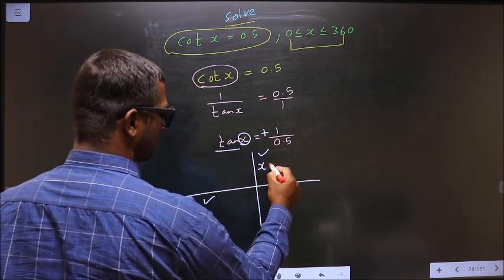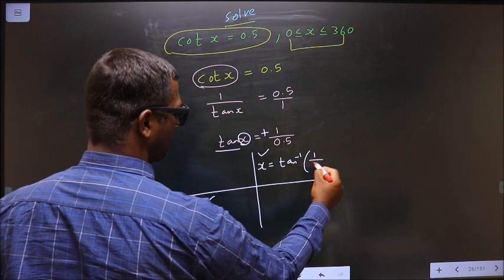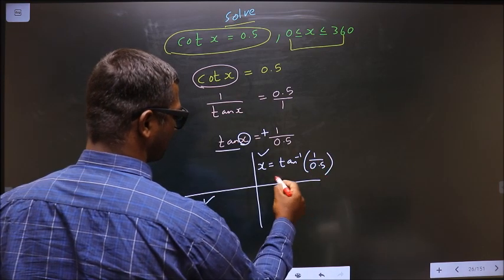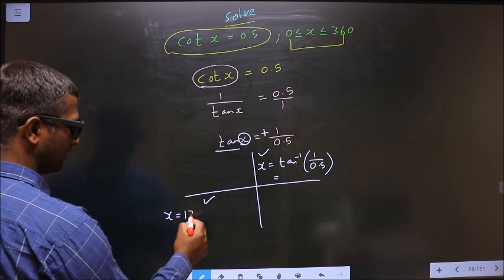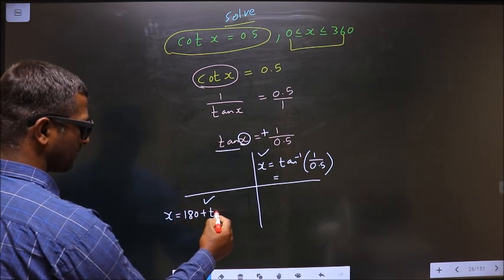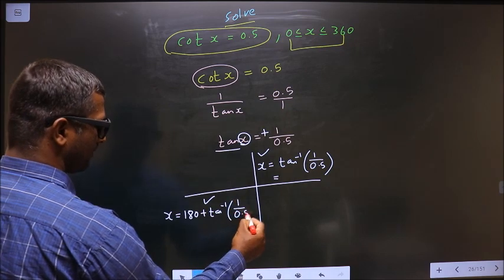To get an angle in the first, we do directly tan inverse 1 by 0.5. To get an angle in the third, we do 180 plus tan inverse 1 by 0.5.